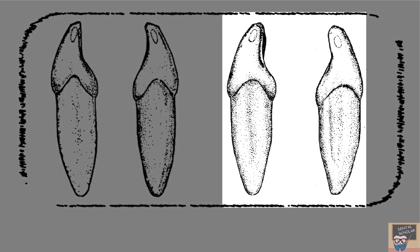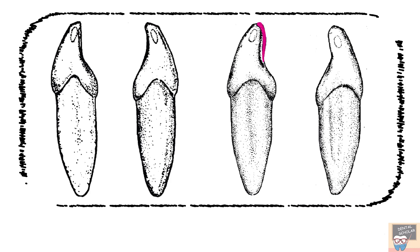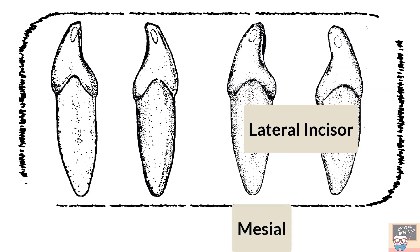Now take a look at the third and fourth teeth. They appear almost identical except that in the third tooth, more of lingual surface is visible and the cervical curvature has more prominence, whereas in the fourth tooth, more of labial surface is visible and the cervical outline is less prominent. So these features help us differentiate between the mandibular lateral incisor mesial view and its distal view. So the third tooth is the mandibular lateral incisor mesial view and the fourth tooth is the mandibular lateral incisor distal view.